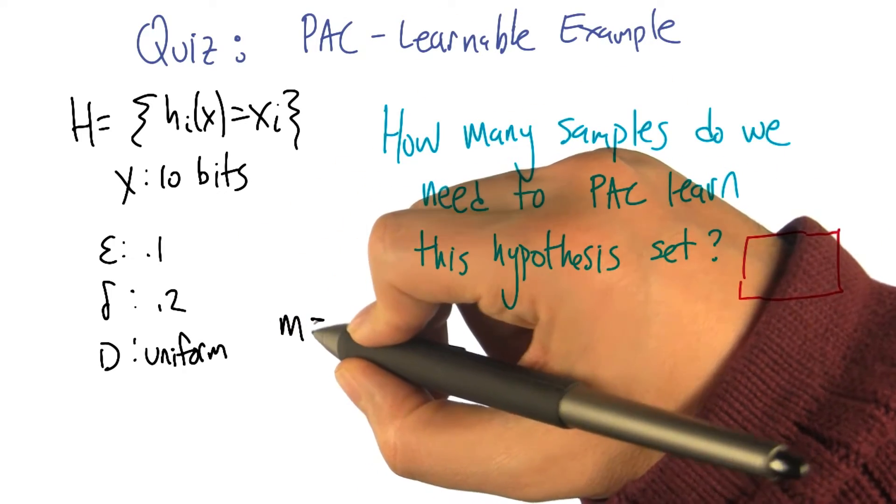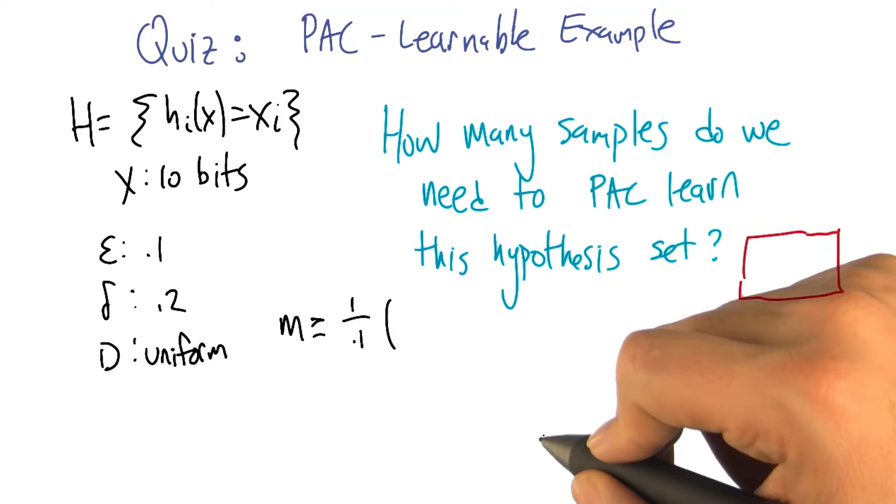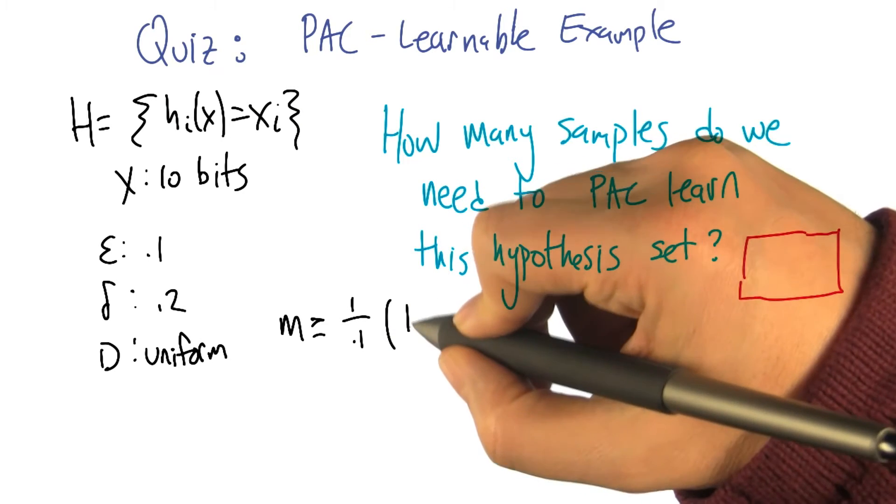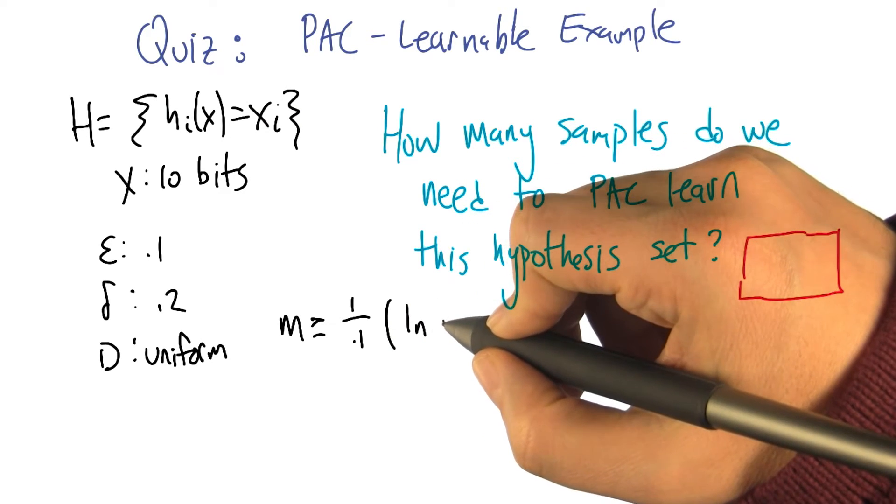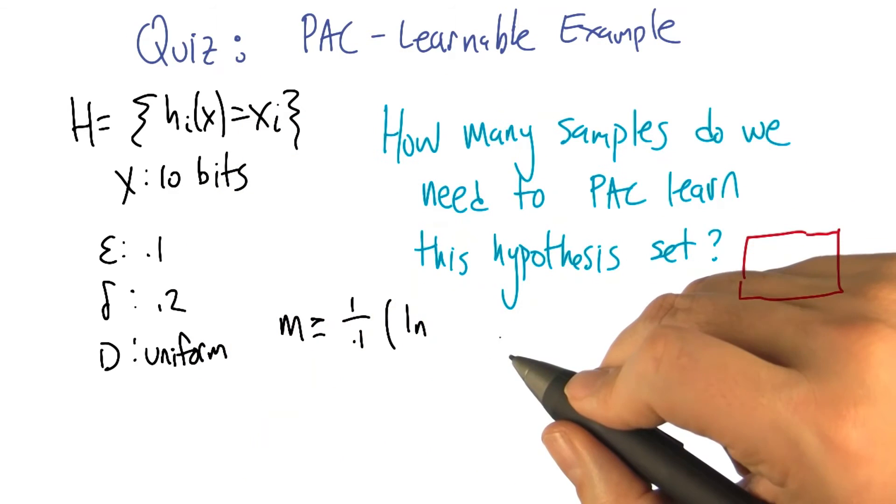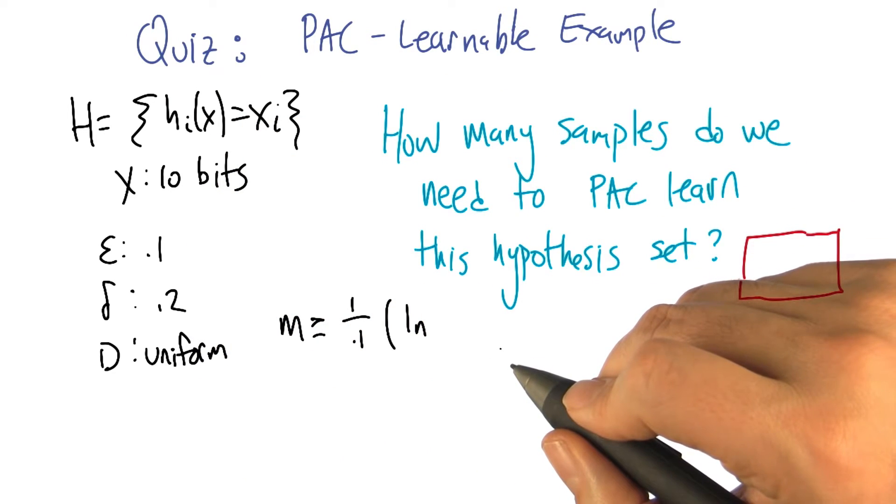Right, so m is greater than or equal to one over epsilon times the natural log of the size of the hypothesis space. Which is what? That's not one of our variables here. 10. Yeah.